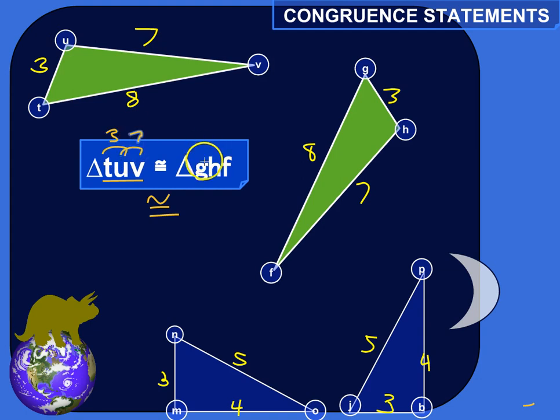Okay, that means that the length of G to H should also be three. If we've written this correctly, that length from G to H should be three, and from H to F should be seven. Because these need to be in the same order. So G to H is three.